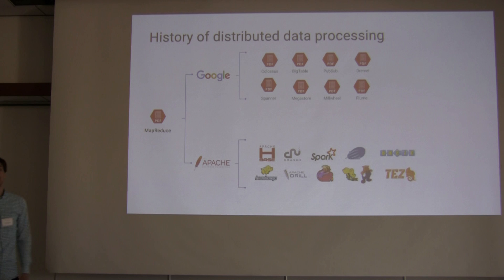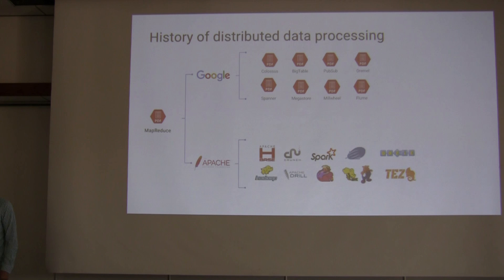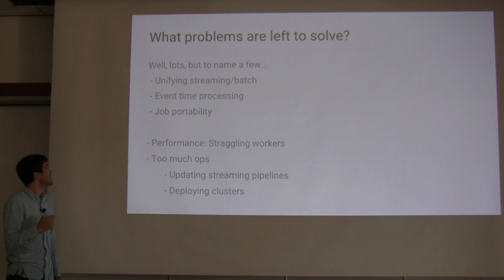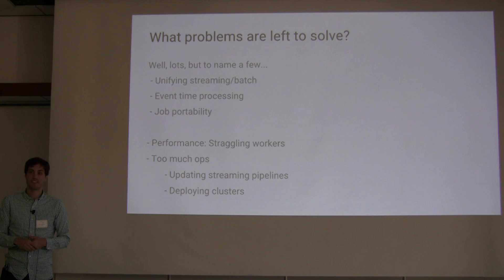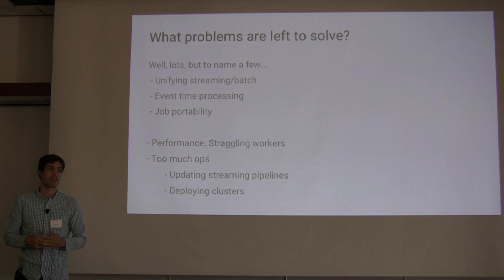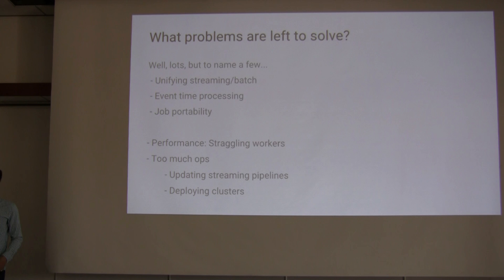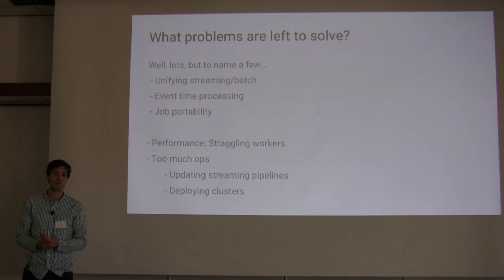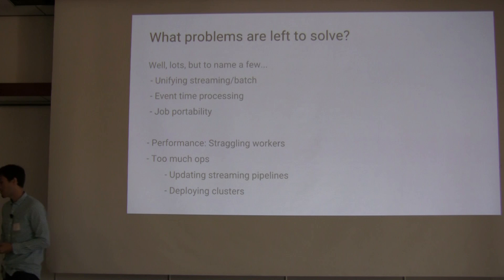Maybe a couple years ago this is what the landscape looked like, at least for us internally at Google. But we still saw some work to be done. One is how you write big data jobs — there were stream frameworks and batch frameworks. Event time processing: most frameworks provided only arrival time, not event time. And then job portability: if you write to one framework, you have to rewrite it when the next popular one comes out. We also saw issues with how jobs are run — operations of running a big data system is a lot of work. And performance — straggling workers specifically is a problem that's been around since the beginning.